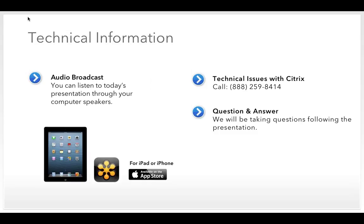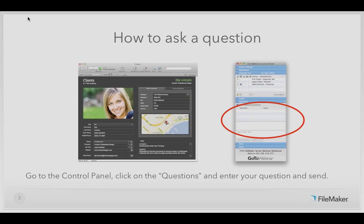Before we get started, I have some brief housekeeping notes. For the best experience, we recommend that you use a broadband connection, and if you have any problems or require online assistance at any time, please contact Citrix Technical Support at 1-800-259-8414. During the presentation, you're going to have the opportunity to ask questions — we encourage you to ask as many as possible. To enter questions, go to Control Panel, click on Questions, enter your question, and click Send. We will cover as many questions as possible.